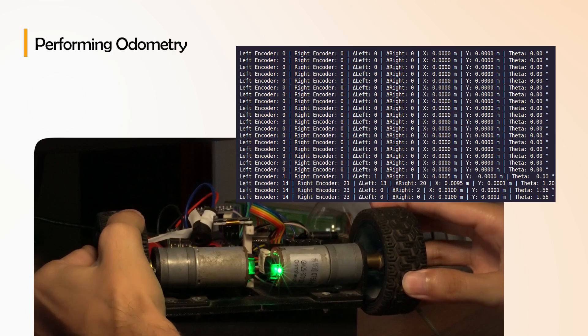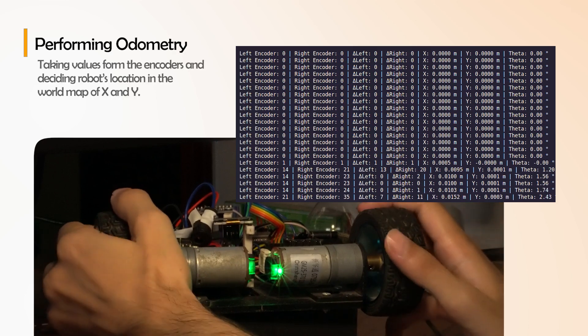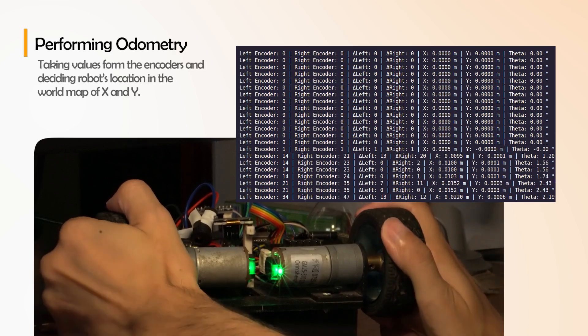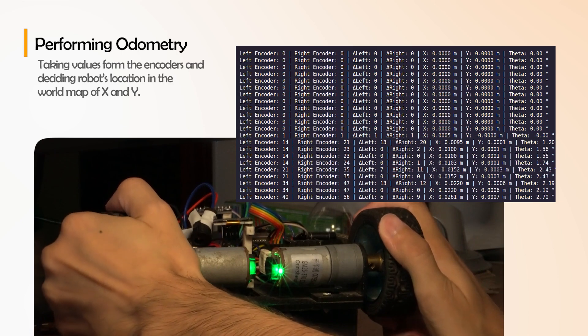The project that I am referring to is performing odometry - taking values from the encoder and deciding the robot's location in the world map of x, y. That tells the robot that the robot is at 10 of x and 5 of y from the initial position. That is going to be done through encoders.